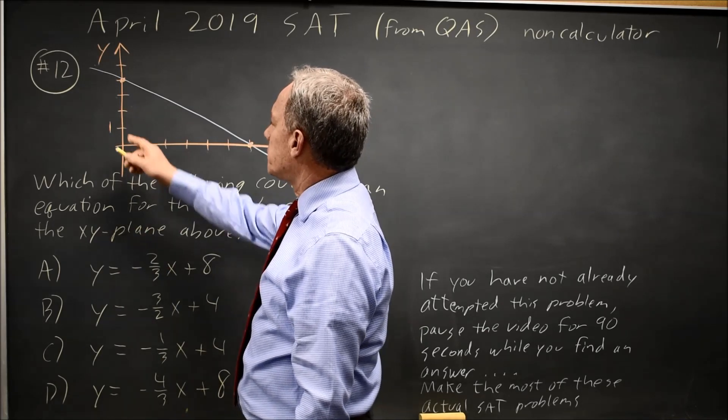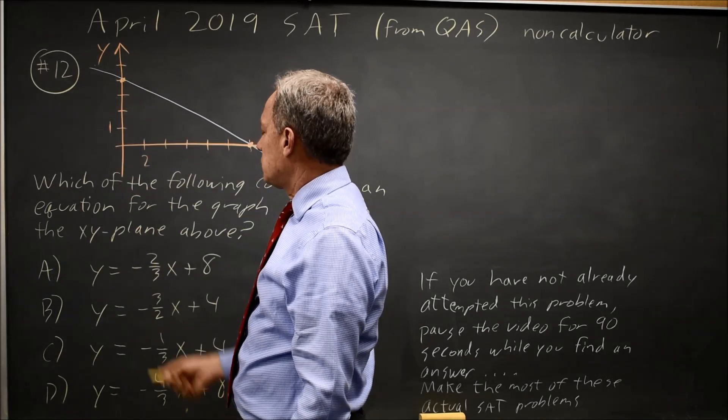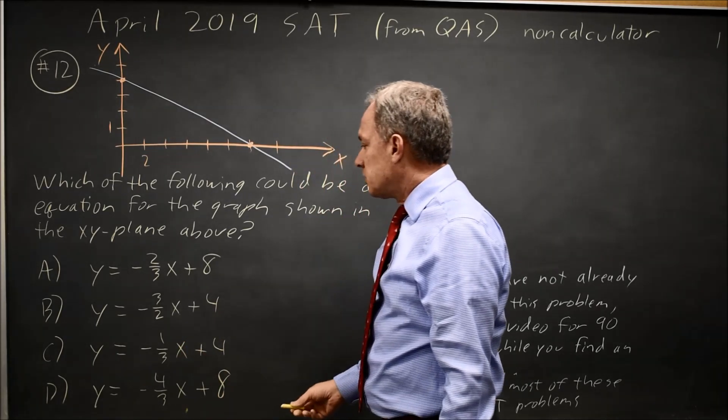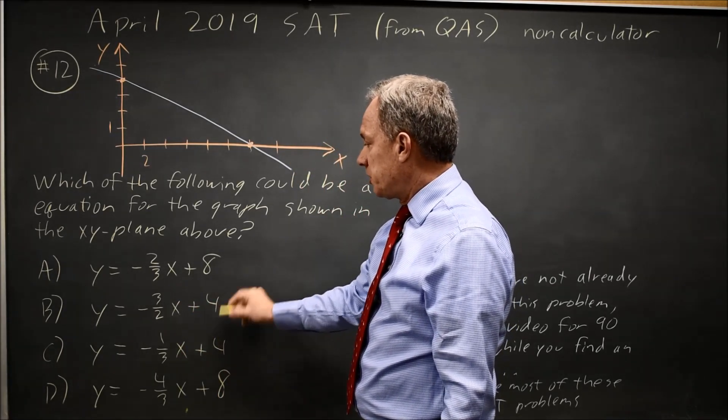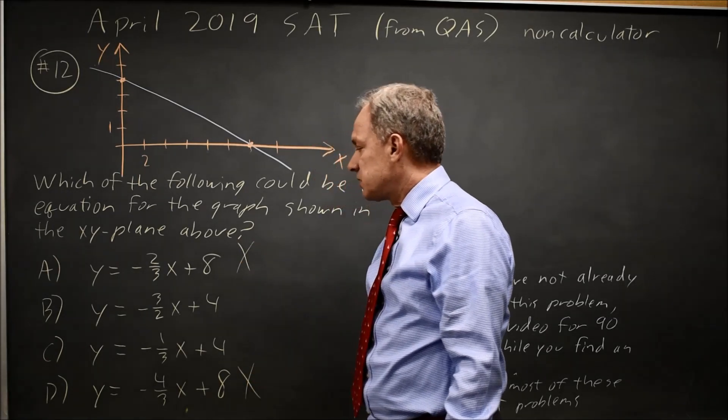So let's find the equation. The y-intercept is one, two, three, four. These are all slope-intercept, so it's one of the two choices where y equals mx plus b, b equals four. So that's not choice a, and it's not choice d.